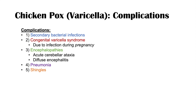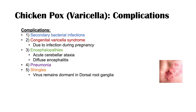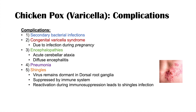Shingles is a complication often considered later in life. The varicella zoster virus remains dormant in the dorsal root ganglia, suppressed by the immune system, even after clearing the chickenpox infection. During immunosuppression — whether due to age, comorbidities, or immunosuppressive drugs — the virus can become reactivated, leading to a shingles infection.